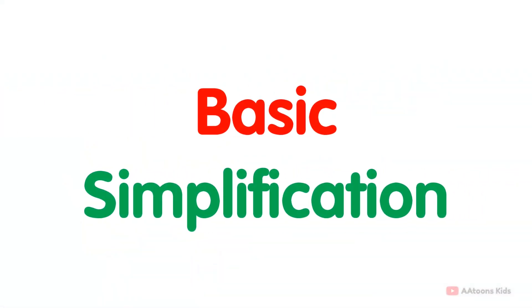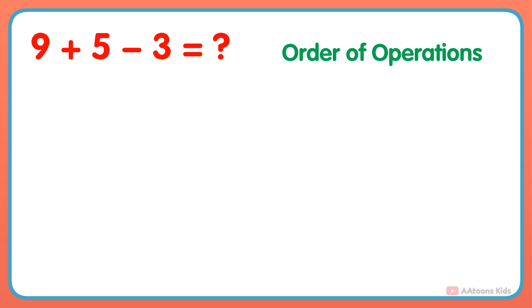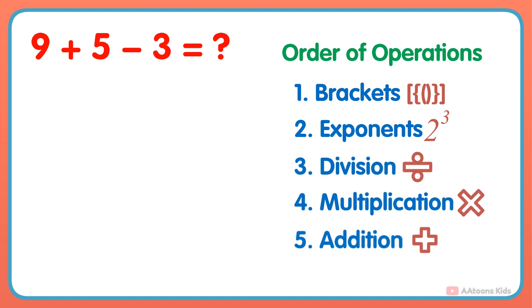Basic simplification problems for kids. What is 9 plus 5 minus 3? To solve this type of problem, you need to follow the arithmetic order of operations. The order of operations is a set of rules that tell you which mathematical operation to perform first, second, third, and so on. The order of operations is: brackets, exponents, division, multiplication, addition, subtraction.